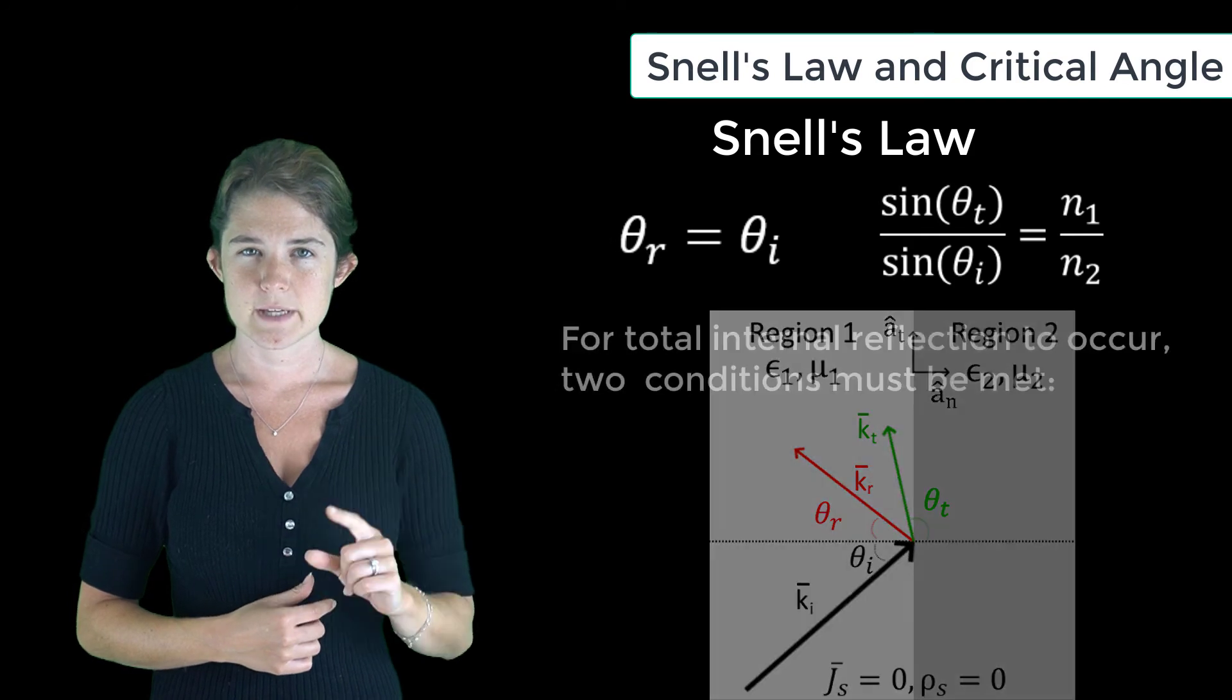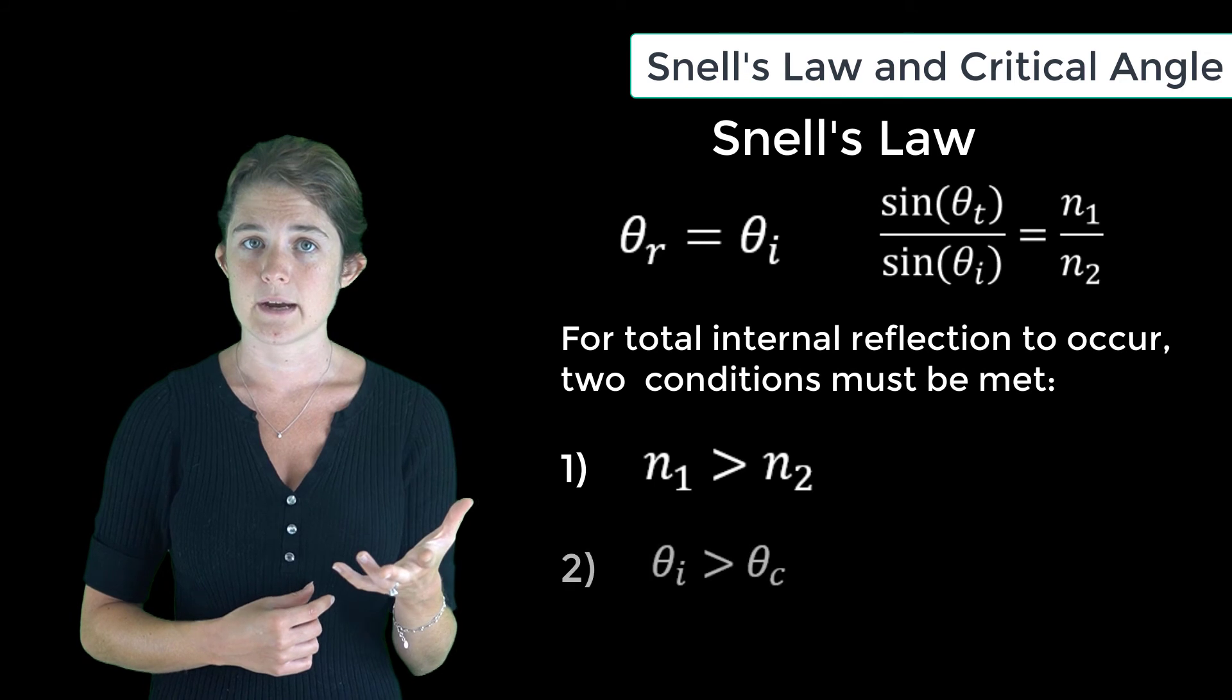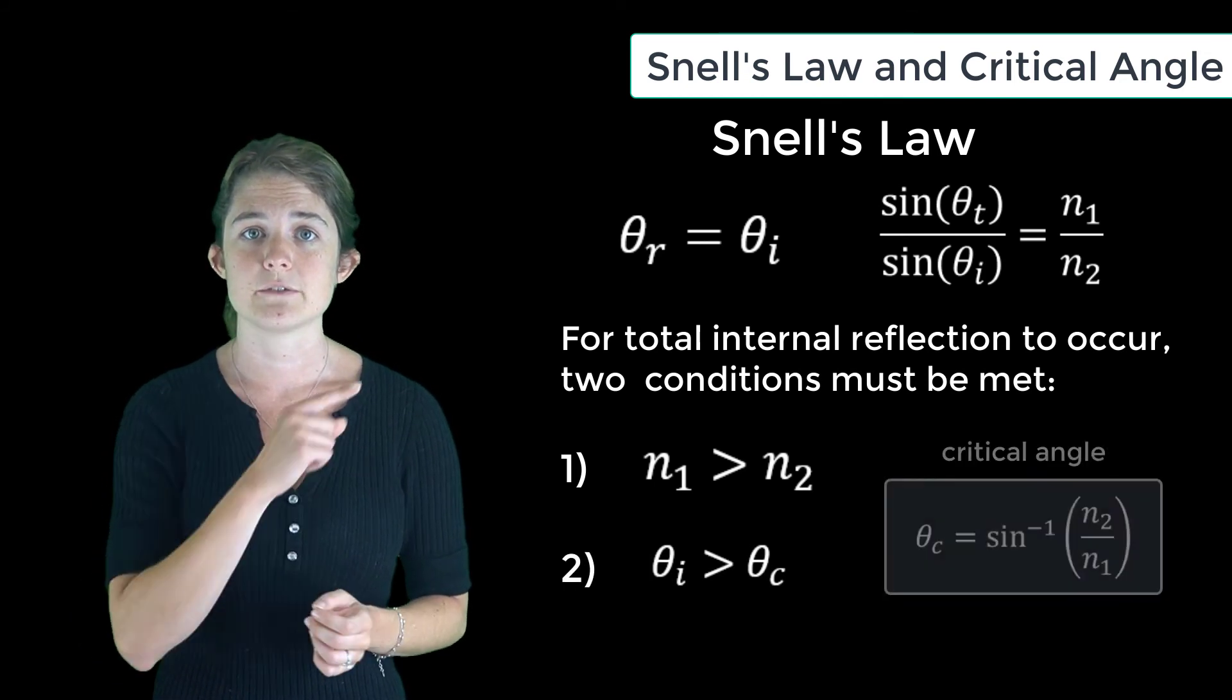For this to happen, n1 has to be greater than n2, and the incident angle theta I has to be greater than theta C, the critical angle, which is defined like this.